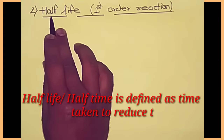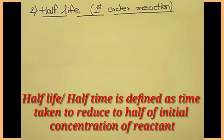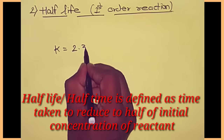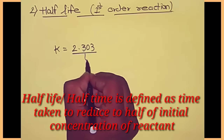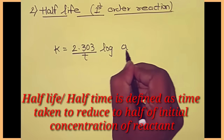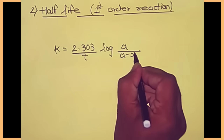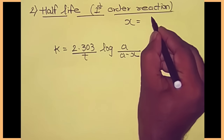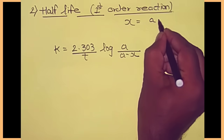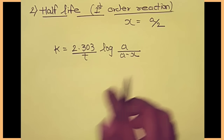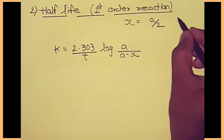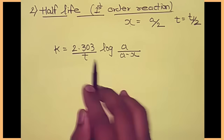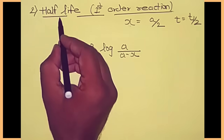The second kinetic characteristic is half-life of first order reaction. For that, I'll write again the rate equation: k equals to 2.303 upon t, log of a upon a minus x. As we know, half-life is when half of the reactant gets converted to product. So formation of product will be equal to half of reactant, so we can write x as a by 2, and in this case t is replaced by t half.